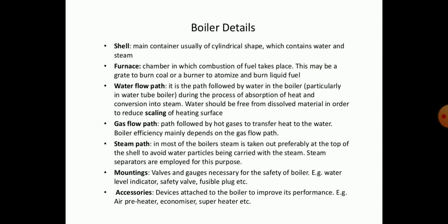There are various main parts in a boiler. The first is the shell, which is the main container, usually of cylindrical shape, containing water and steam. The furnace or fire chamber is where combustion of fuel takes place; it may have a grate to burn coal or a burner to atomize and burn liquid fuel. The water flow path is the path followed by water in the boiler, particularly in the water tube boiler, during absorption of heat and conversion into steam.